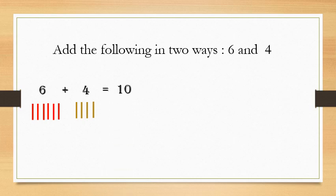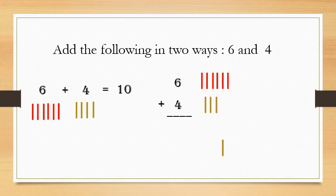Now let's do in vertical method — writing the numbers one below the other. 6 plus 4. Here also, draw 6 lines: 1, 2, 3, 4, 5, 6. Then draw 4 lines: 1, 2, 3, 4. Count the total number of lines: 1, 2, 3, 4, 5, 6, 7, 8, 9, 10. So 6 plus 4 equals 10. When you add the numbers horizontally or vertically, you will get the same answer.